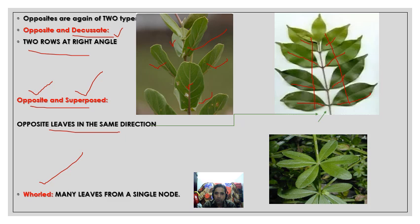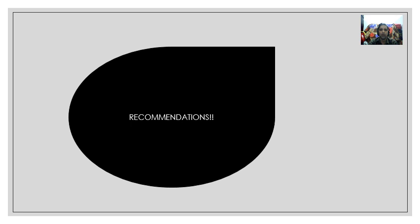The final case is whorled phyllotaxy. Here at one node you can see one, two, three, four, five, six — six leaves are present at one node, producing a whorl-like structure. This is called a whorled arrangement. Finally, I recommend you go to any green place — a garden or a lawn — take your notebook, and observe all the examples you have studied here in the field.